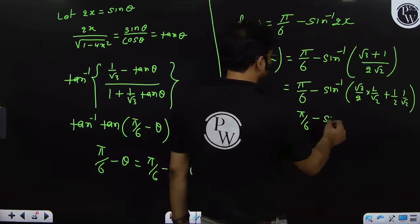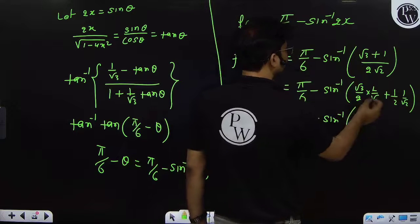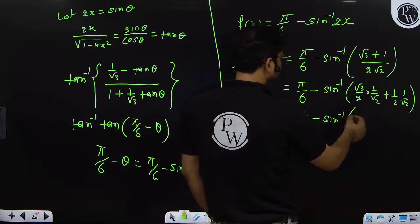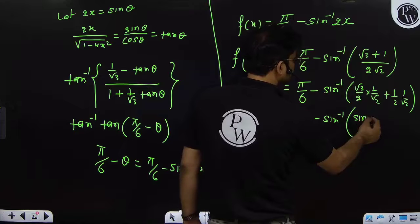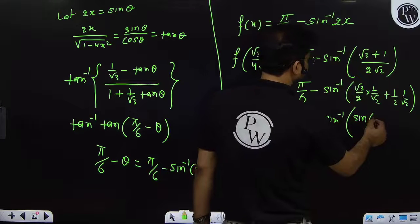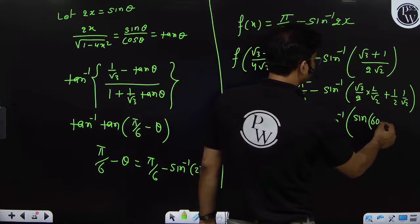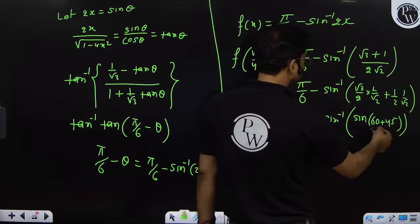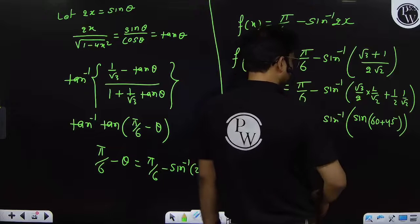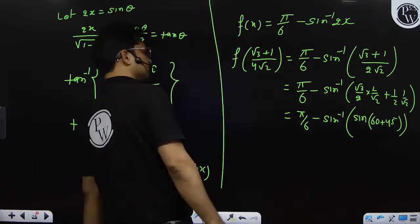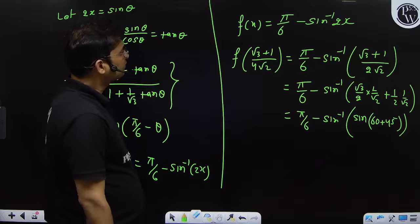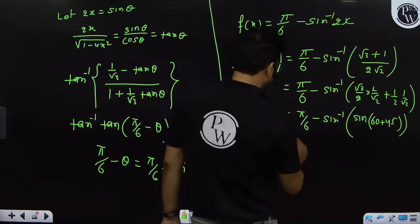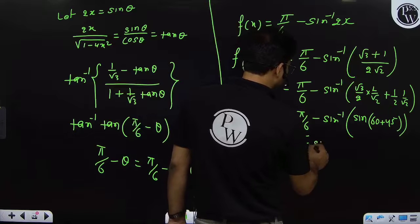This value becomes π/6 - sin⁻¹[sin45°·cos30° + sin60°·cos45°]. We can write sin60° + 45°, that is sin(60° + 45°) = sin60°·cos45° + cos60°·sin45°. So this value becomes π/6 - sin⁻¹(sin(60° + 45°)).